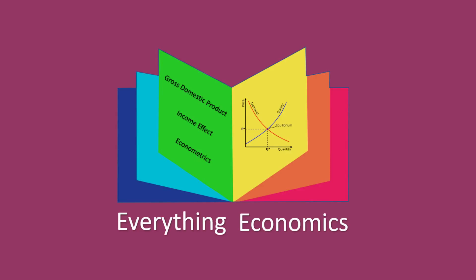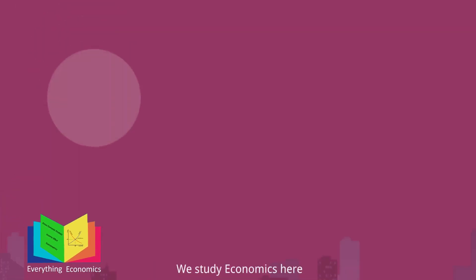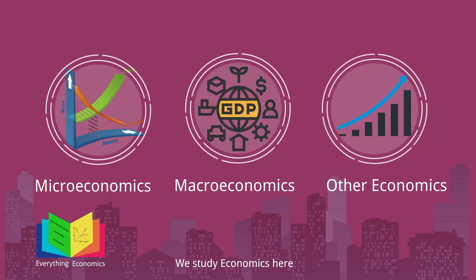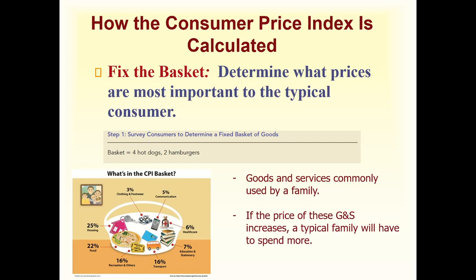Welcome to Everything Economics, where we study microeconomics, macroeconomics, and every other type of economics. In this part, we will discuss how the Consumer Price Index is calculated. In the previous part, we discussed what inflation was and what CPI was — CPI, or Consumer Price Index, is used to calculate the inflation rate.